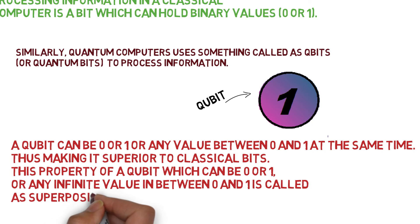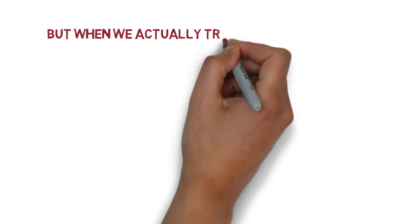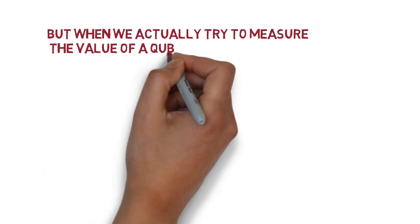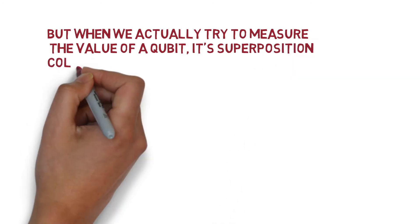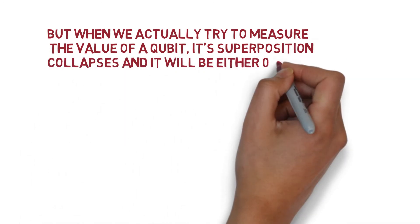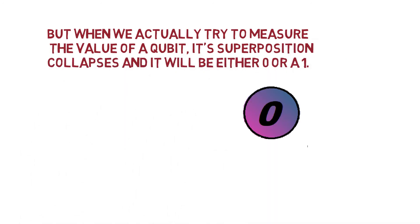This property of a qubit is called superposition. But when we actually try to measure the value of a qubit, its superposition collapses and it will be either 0 or 1. So yes, quantum computing is weird and difficult to understand with lots of math involved in it.